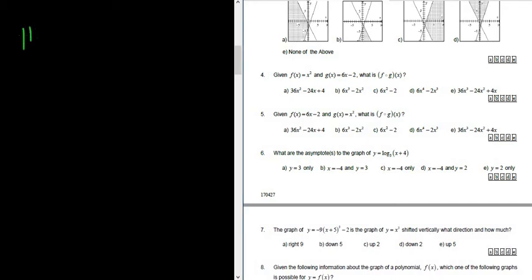In this video, we're going to work out problem number five. So they give us two functions, f of x equals 6x minus 2,